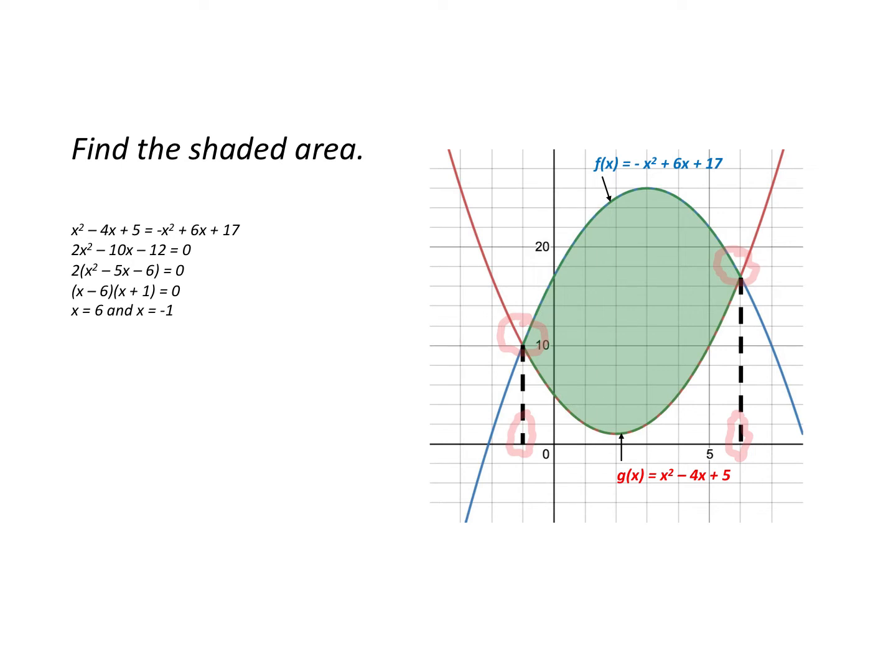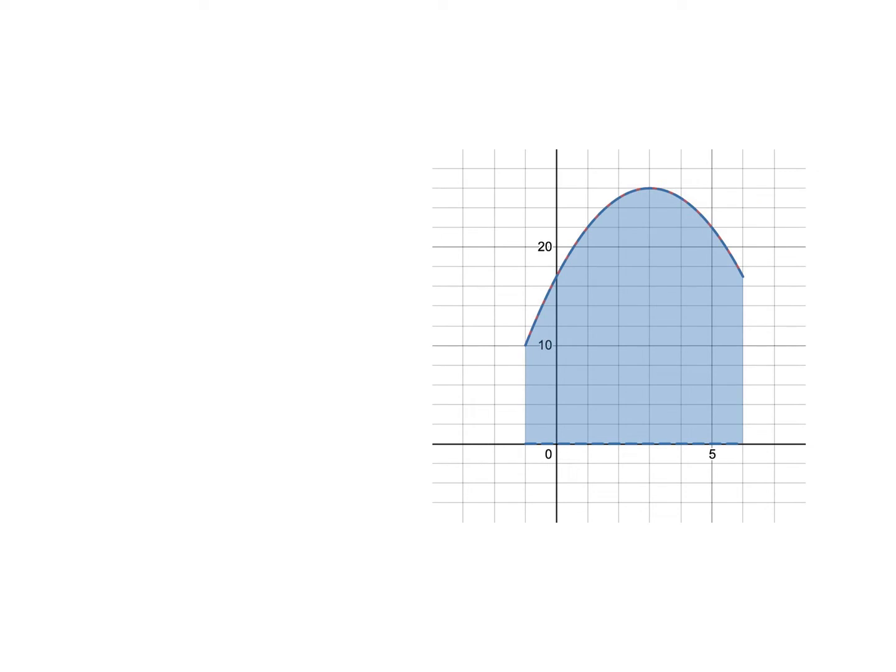Well, the first thing we're going to do is find this area, the area beneath the parabola which opens down. We'll call it area 1, and it's easily found by using integration, going from minus 1 to 6 of the function, which in this case is minus x squared plus 6x plus 17, and just integrating that from minus 1 to 6. That'll give us that blue area on the graph.